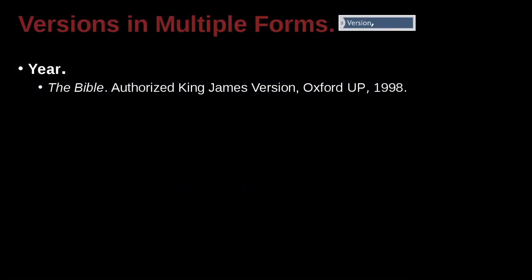Let's take a look at some multiple forms that we can use. In this case, we can look at the year, for example. Here we have something that's kind of like a famous book that doesn't really have a very clear, maybe one-time publication. Most books and most journals are going to be very clear — they come out once. What about if you have something like the Bible? What are you going to do with that?